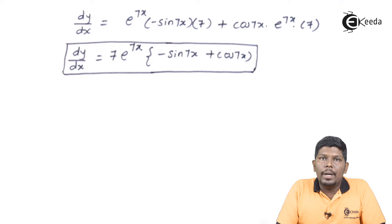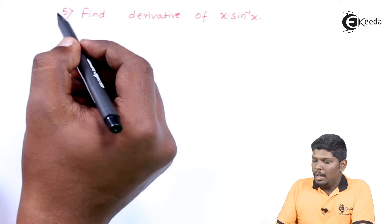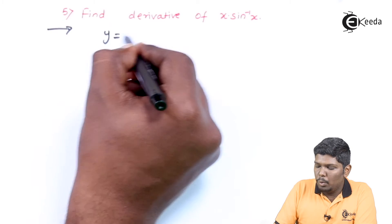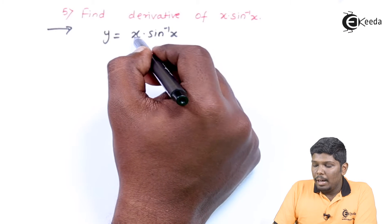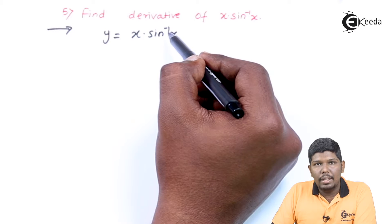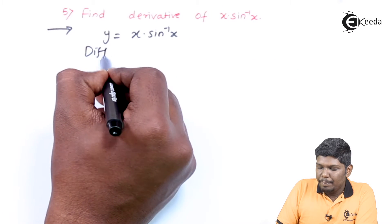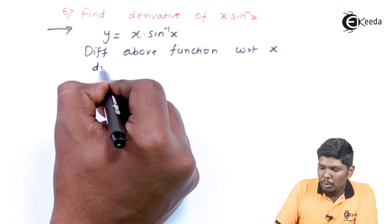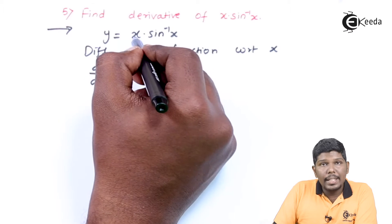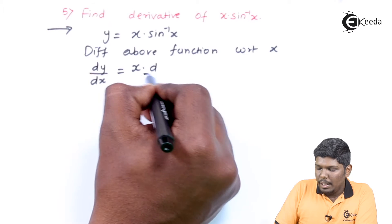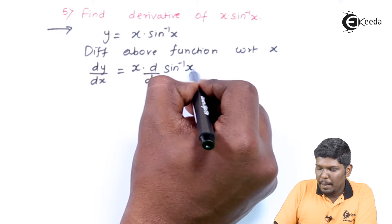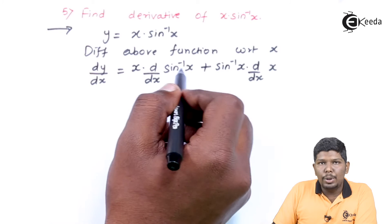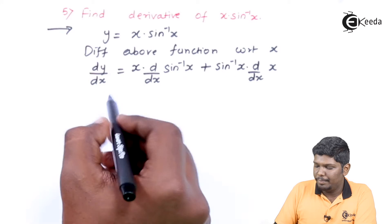Now let us start with problem number 5. In problem number 5, we have: find the derivative of x·sin⁻¹(x). We consider the given function as y equals x into sin inverse x. Again we have two functions getting multiplied, so we will use the UV rule. Differentiating the above function with respect to x, dy/dx equals u as it is, derivative of v, plus v as it is, derivative of u. These are standard functions, so we have the formulas directly.